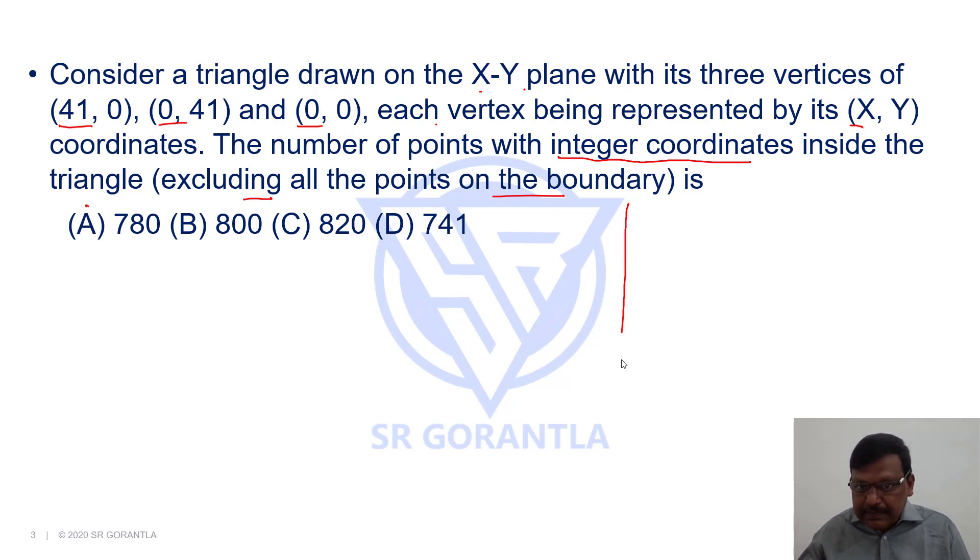Let's draw the diagram. So what are the three vertices? We have (0, 0), (41, 0), and (0, 41). Okay, this is (0, 0). Next, we have (41, 0), and we have (0, 41).